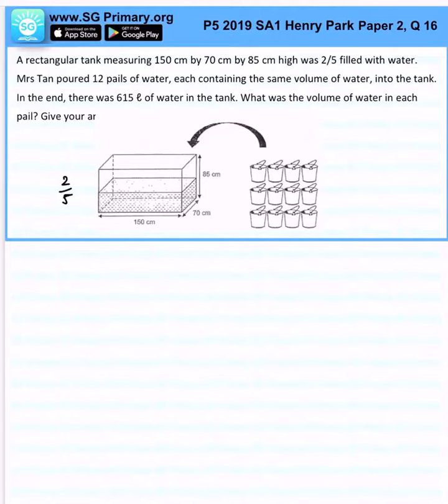So very simple, first of all let's go and find out the volume of the original water in the tank. Volume of water originally, that is 2/5 times the volume of the full tank: 2/5 × 150 × 70 × 85, and that gives us 357,000.